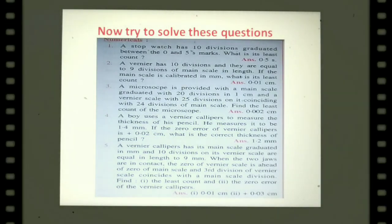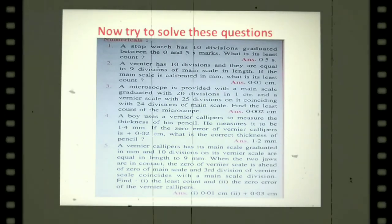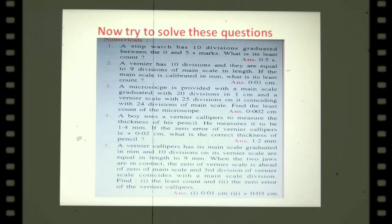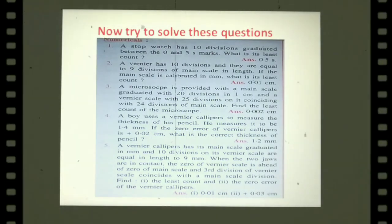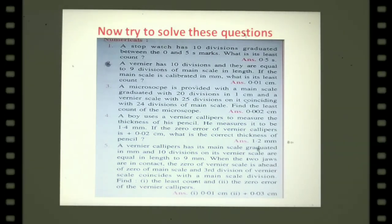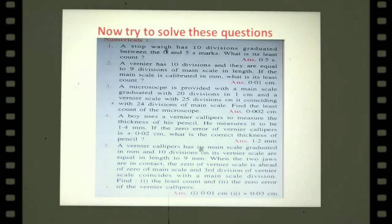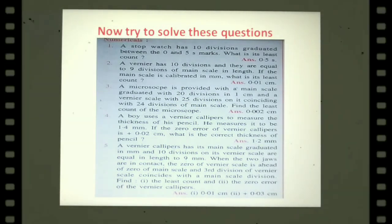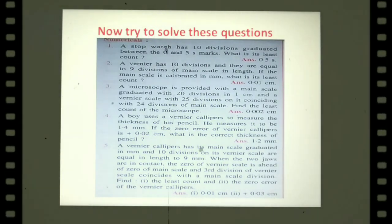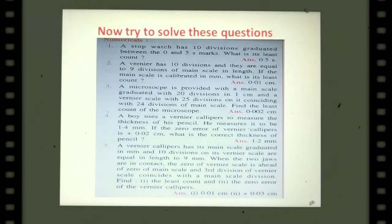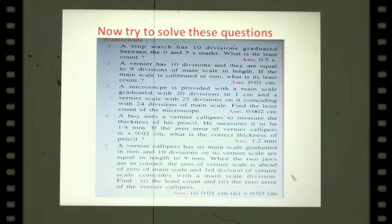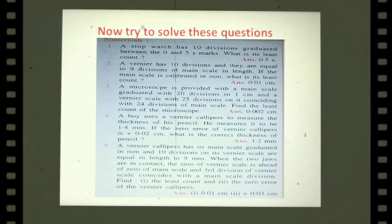Fourth: a boy measures his pencil thickness as 1.4 mm with a vernier calipers having a zero error of plus 0.02 cm — be careful about the different units, convert them before solving. Fifth: a vernier calipers has its main scale in millimeters and 10 vernier divisions equal 9 mm; when jaws are in contact the zero of the vernier is ahead of the zero of the main scale and the third vernier division coincides with a main scale division — find the least count and zero error.